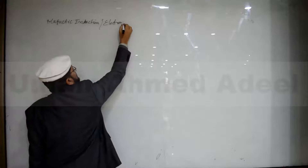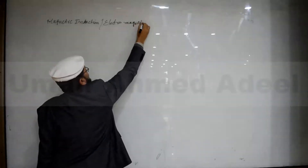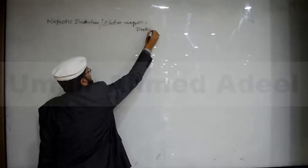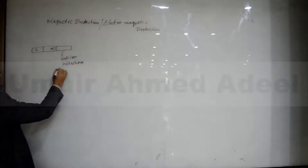Electromagnetic induction. Often you see that if you have a bar magnet — say this is the north pole and this is the south pole — and a soft iron is placed near it, then you will see that this soft iron will achieve the properties of the magnetic field.